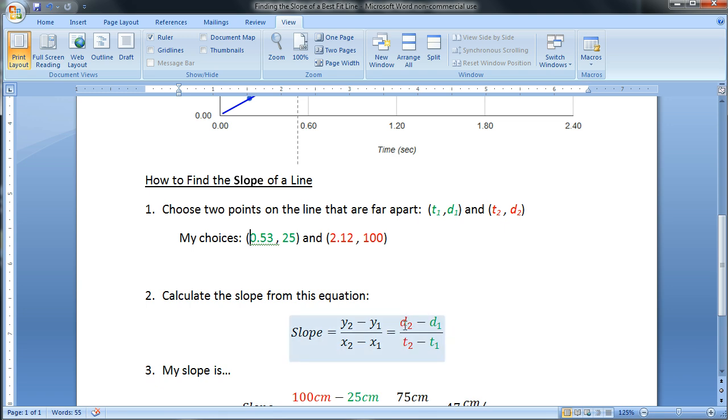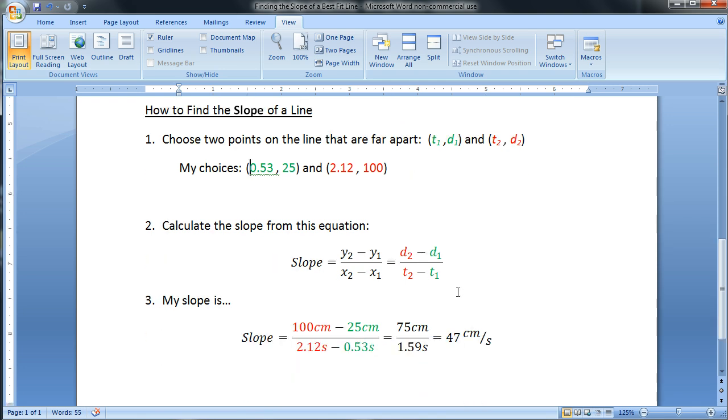I've color coded them: d2 and d1, that's right here. d2 is 100, d1 is 25, and those are centimeters. We're going to plug those into the equation. So we have d2, 100 centimeters minus 25 centimeters. And on the bottom, t2 minus t1 is 2.12 seconds minus 0.53 seconds.